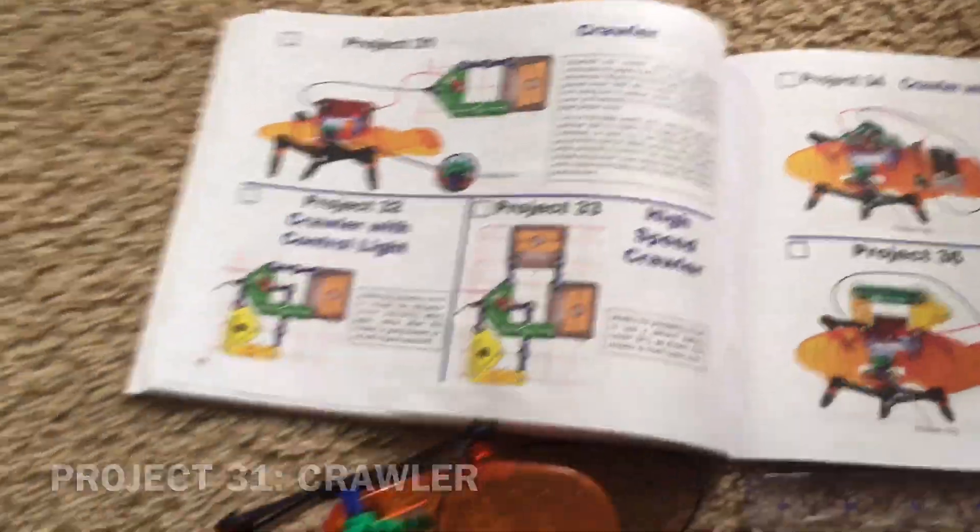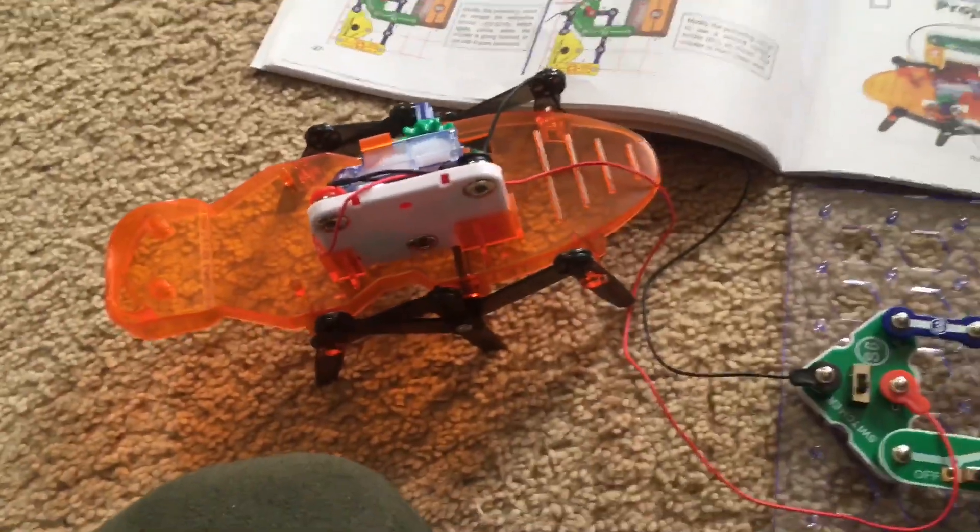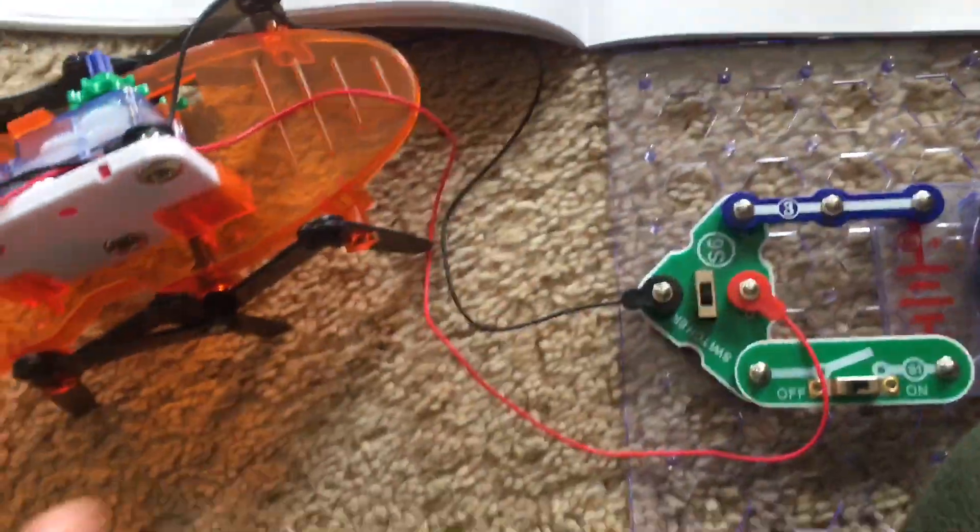Project 31 is crawler. I assembled the crawler using the instructions near the beginning of this manual and then I hooked it up to this circuit using the jumper wires.